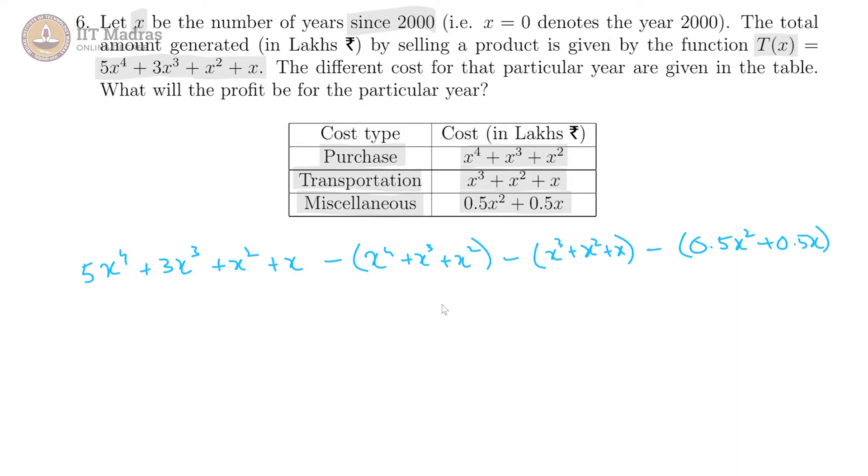This would be the total profit and for that we now have to look at each x power term. x^4 there are two terms, 5x^4 and minus x^4, so we get 4x^4.